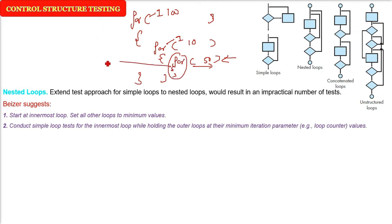The inner loop has to be tested like what we learned in the simple loop. That is, skip once, one value, two value, two times, and then check the boundary values, n minus 1, n, n plus 1. Now, this is done. Now, move outward, give the minimum value to the innermost and the outermost, and then do the simple loop testing for the middle one.